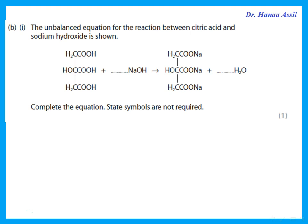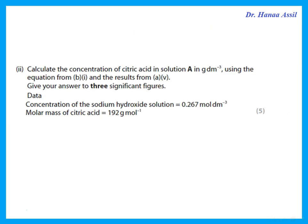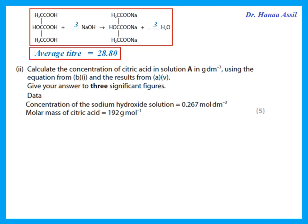The unbalanced equation for the reaction between citric acid and sodium hydroxide is shown. Complete the equation — we need to balance it. We have three sodiums after the arrow, so we need three sodiums, and we also need three H₂O molecules to balance the hydrogens.